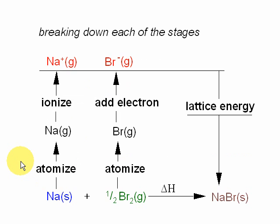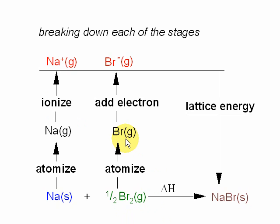Breaking down each of these stages: first, to go from sodium in the solid state to the gas state requires atomising sodium, breaking all the bonds in the metallic structure. To then go from sodium gas to the sodium positive ion requires ionisation — stripping an electron from each of the atoms. For bromine, we atomise to break the covalent bonds, then add an electron to each of the atoms to form the bromide ion.